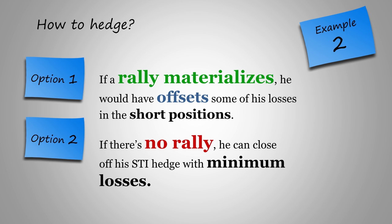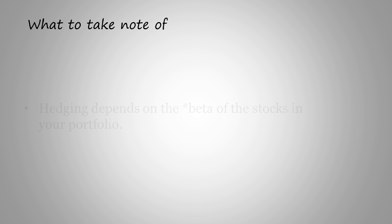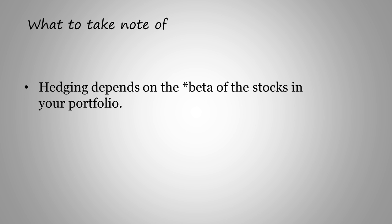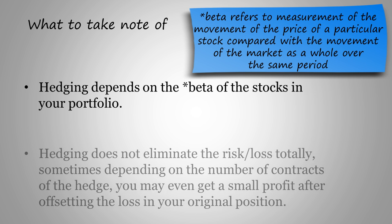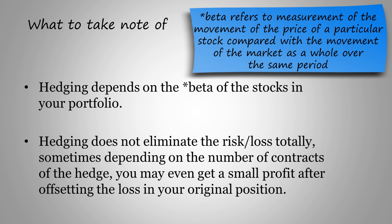It sure sounds easy, but what must we take note of when we are about to hedge our position? Hedging basically depends on the beta of the stocks in your current portfolio. Beta refers to the measurement of the movement of the price of a particular stock compared with the movement of the whole market over the same period of time. It is also important to know that hedging does not eliminate the risk or loss totally. Sometimes, depending on the number of contracts of the hedge, you may even get a small profit after offsetting the loss in your original position.